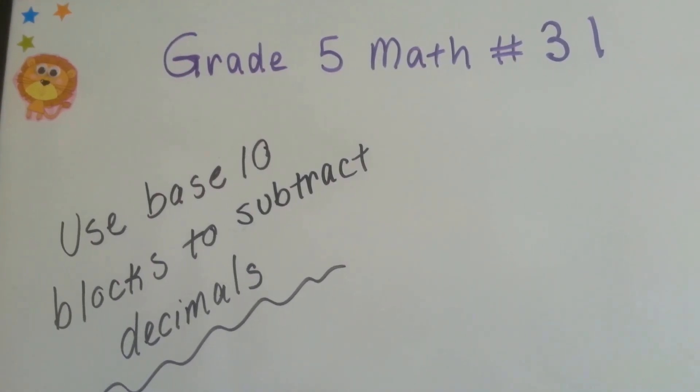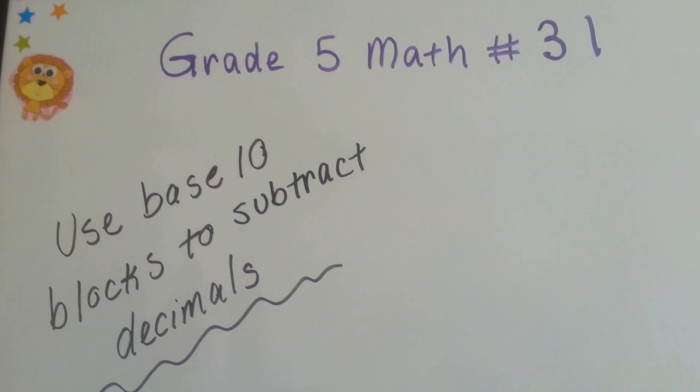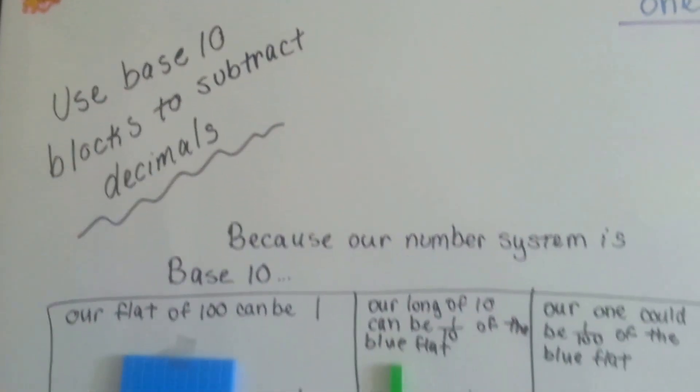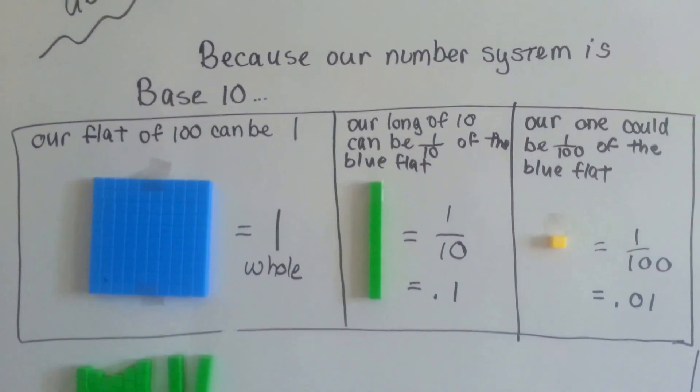Grade 5 math number 31: used base 10 blocks to subtract decimals. We just used these to add decimals, and now we're going to use them to subtract.